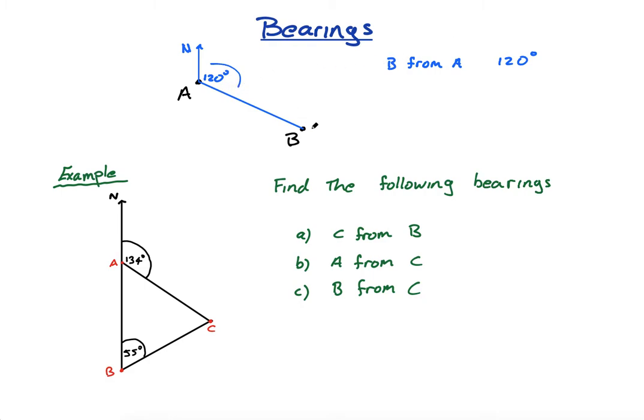Now the bearing of A from B, a little bit more tricky. What we do is, again, from B means we are at B. So A from B means we are at B. What we're going to do is we are going to face north. So we always start off and face north.